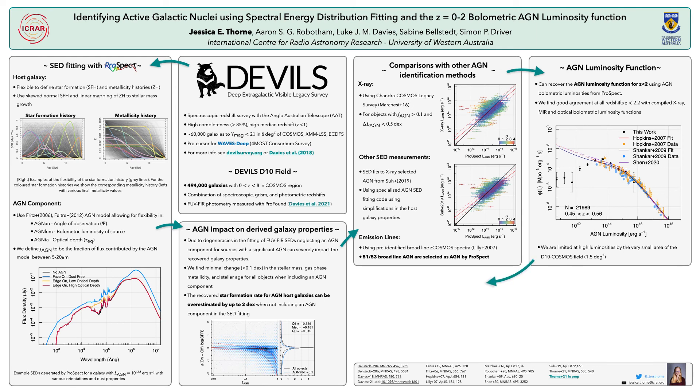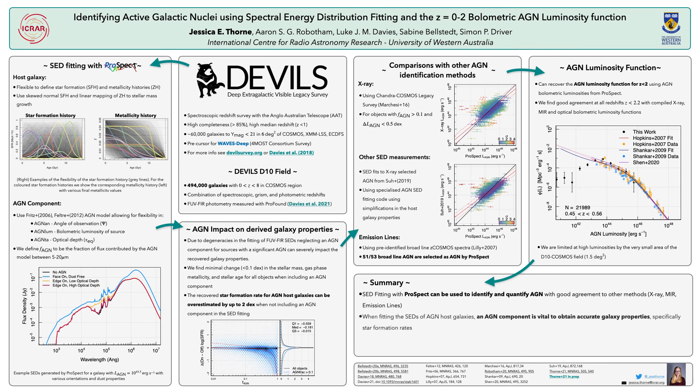In summary, with SED fitting with PROSPECT, we can use it to identify and quantify AGN in good agreement with other methods. When we fit the SEDs of AGN host galaxies, you need to include an AGN component in order to obtain accurate galaxy properties. And using just our SED-identified AGN, we can recover the AGN luminosity function in good agreement with previous measurements and theoretical predictions. If you have any questions, feel free to email me or reach out to me on Twitter. Thank you.